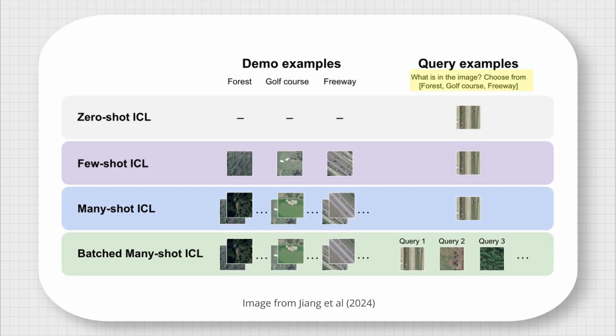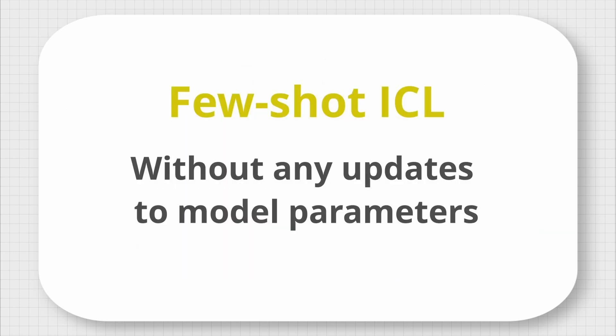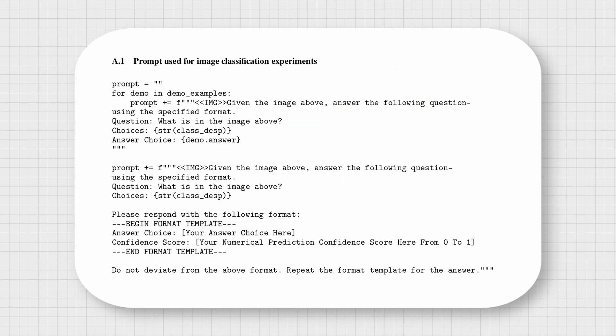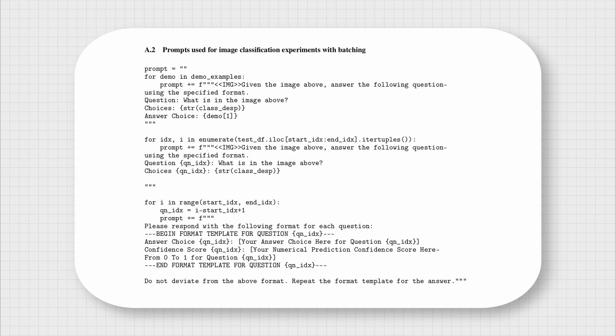ICL is basically providing the model with additional examples of the desired response at the prompt. It does not require any model training or parameter tuning, and anyone can do this on the fly inside the prompt.